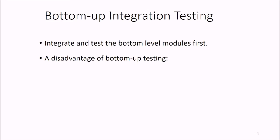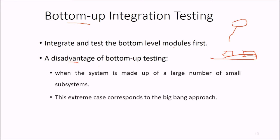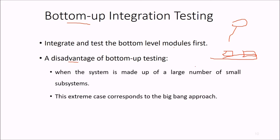We have bottom-up integration testing. We integrate and test the bottom level modules first. We have modules we call them as managerial modules and then we have modules in the lower level. These are the basic interaction input output system level modules. The disadvantage of bottom-up testing may be that when the system is made up of a large number of small subsystems, then this extreme case corresponds to the big bang approach.